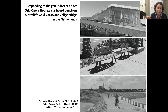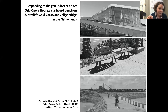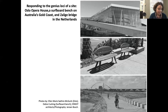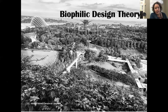Gas Works Park in Seattle is a well-known example where Richard Haag kept industrial remnants and celebrated heritage as a feature rather than hiding it. Other examples include surfboard seats on the Gold Coast, Oslo's Opera House like a glacier connected to water, and the Zalog Bridge when not flooded — what serves as stepping stones during a flood becomes seats and markers the rest of the year.